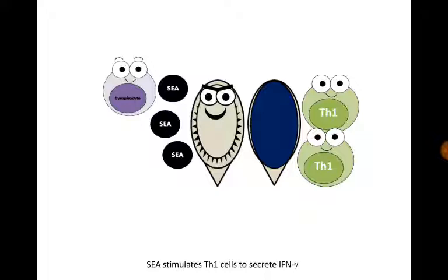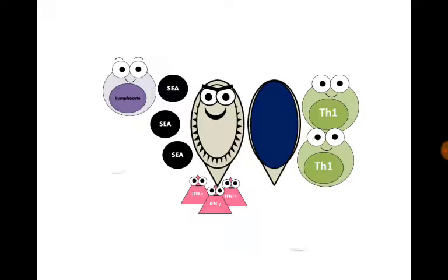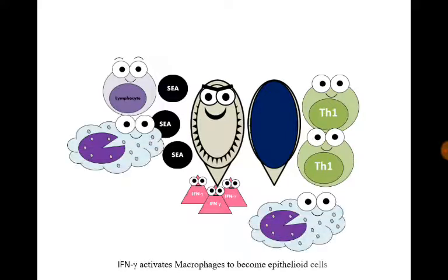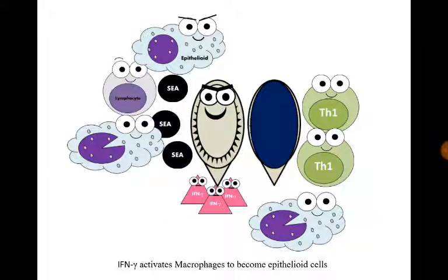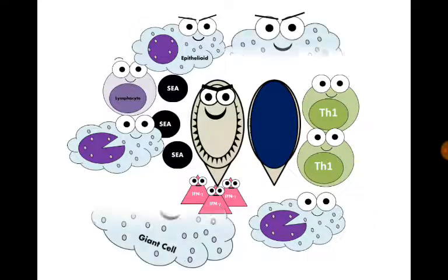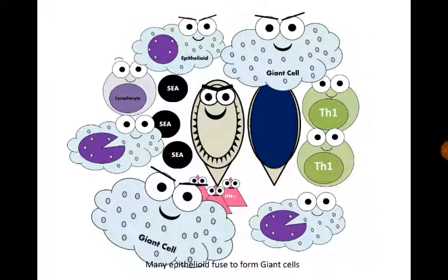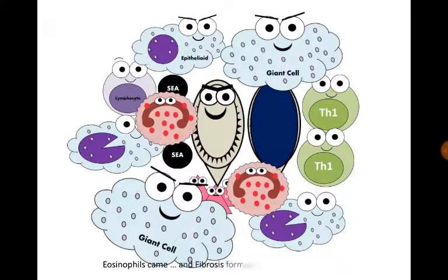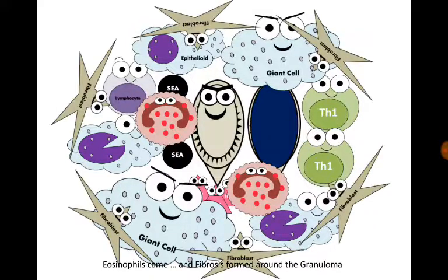Soluble egg antigens stimulate T-helper-1 cells to secrete interferon gamma. Interferon gamma activates macrophages to become epithelioid cells. Many epithelioid cells fused to form giant cells. Eosinophils also came, and fibrosis formed around the granuloma.